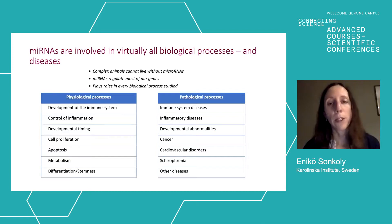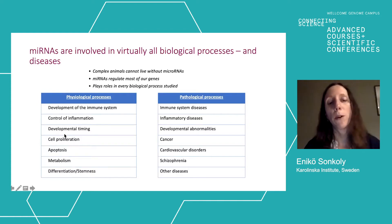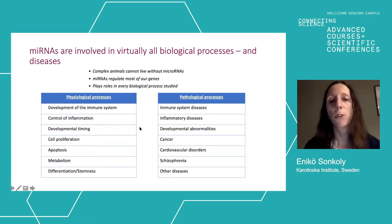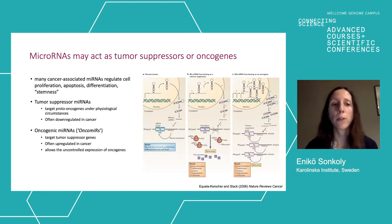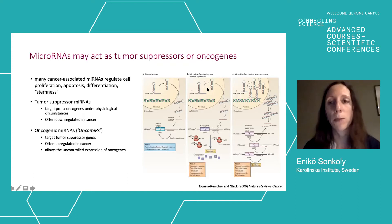MicroRNAs are involved in almost all biological processes where they have been studied. These are some examples of physiological processes shown to be modulated by microRNAs. Since they regulate almost all genes, they play a role in nearly each and every biological process, and their altered expression can lead to pathological processes. In cancer, many cancer-associated microRNAs regulate cell proliferation, apoptosis, differentiation, and stemness, and it is very common that microRNA expression is changed in cancer. Tumor suppressor microRNAs, for example, target proto-oncogenes and are down-regulated in cancer, allowing oncogene expression.